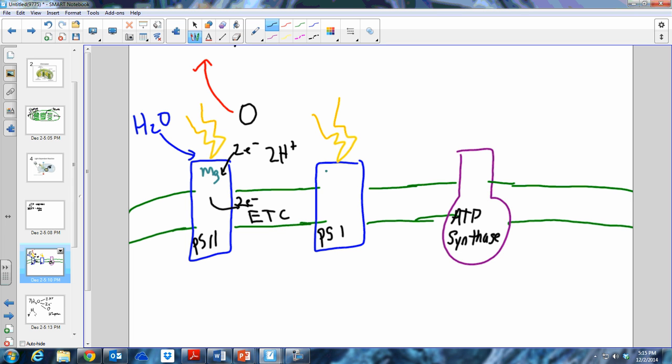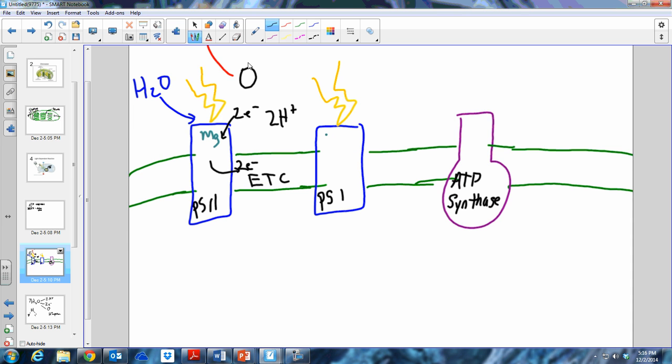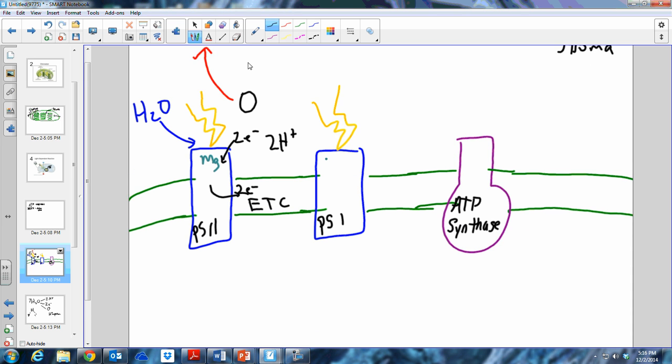Water is split up on the surface of photosystem two. Oxygen is lost as a waste product. The two electrons move into the spot where they were in magnesium and continue to cycle through. The two hydrogen ions are left here in the lumen of the thylakoid.